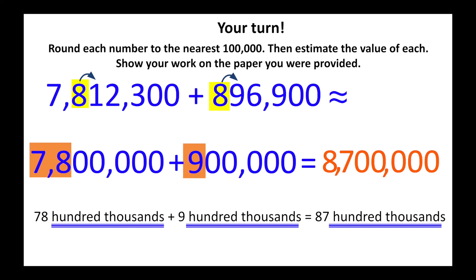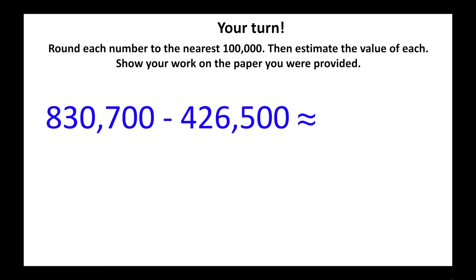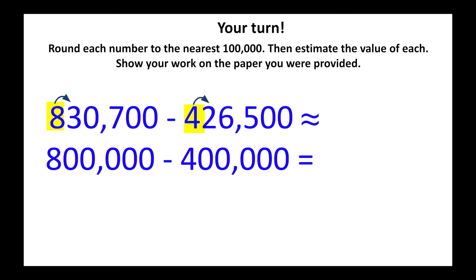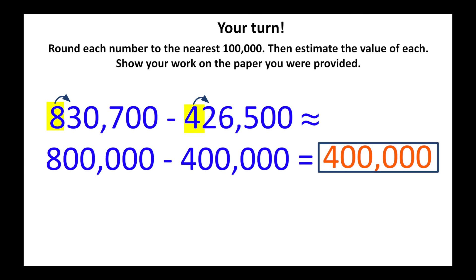The video is going to pause again as you solve this problem in your notes. When you are ready, submit the estimated sum — just the estimated answer, not what you rounded each number to. Highlighting the hundred thousands place in each number, 830,700 should be rounded to 800,000 and 426,500 should be rounded to 400,000. Eight hundred thousands minus four hundred thousands equals four hundred thousand. If you got the correct answer, you would have submitted 400,000.